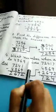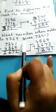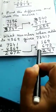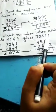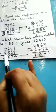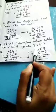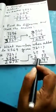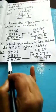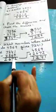Next, what number when added to 4,569 gives 7,241? Children, we will subtract 4,569 from 7,241. Your answer will come 2,672.